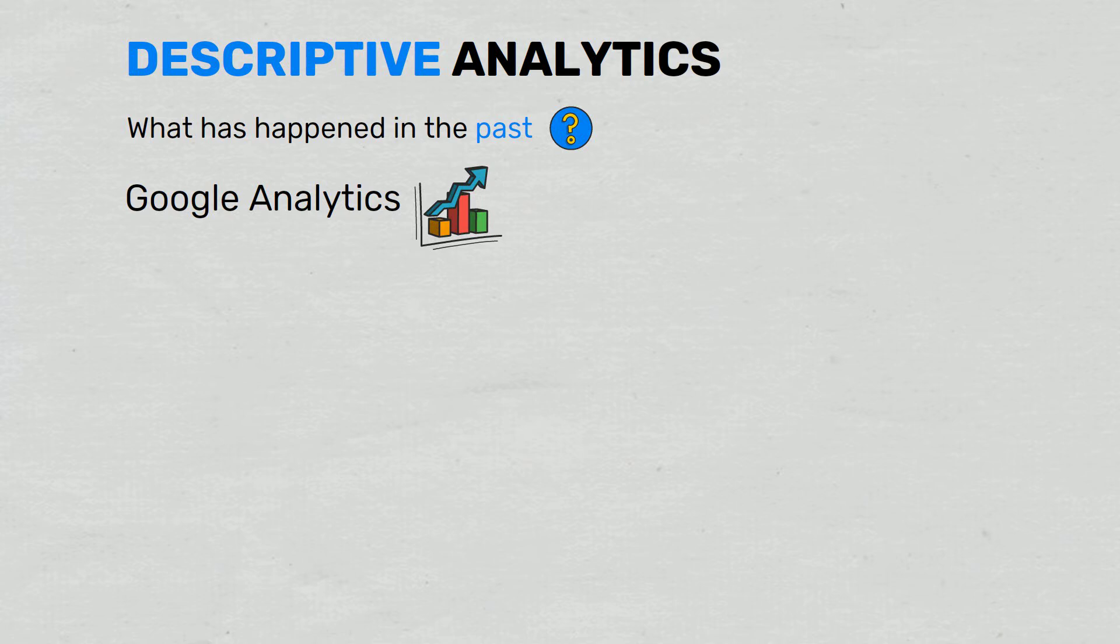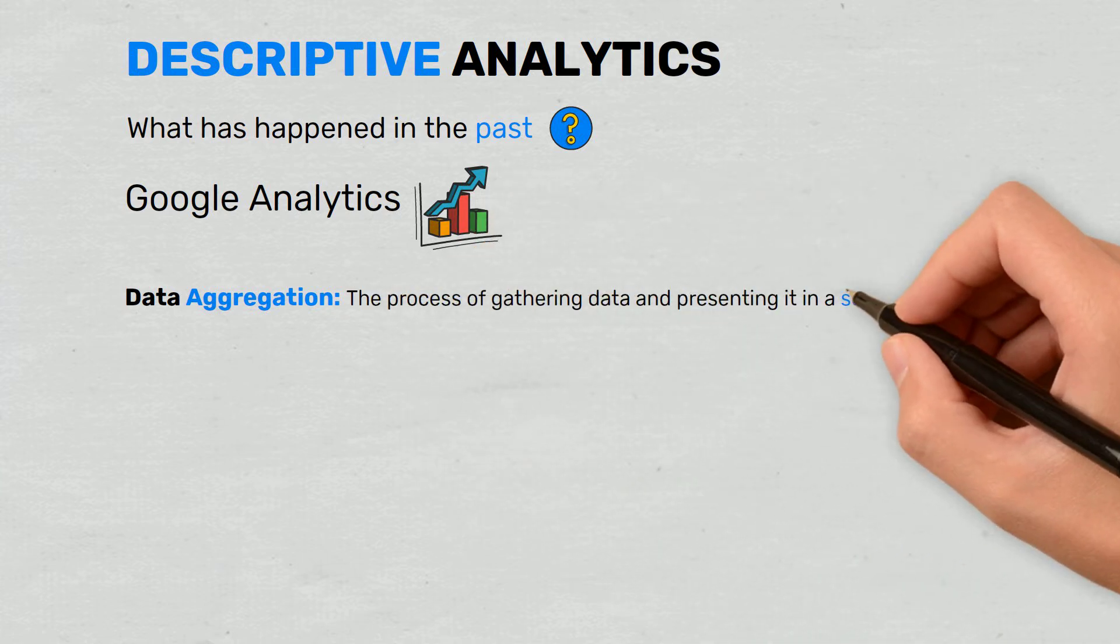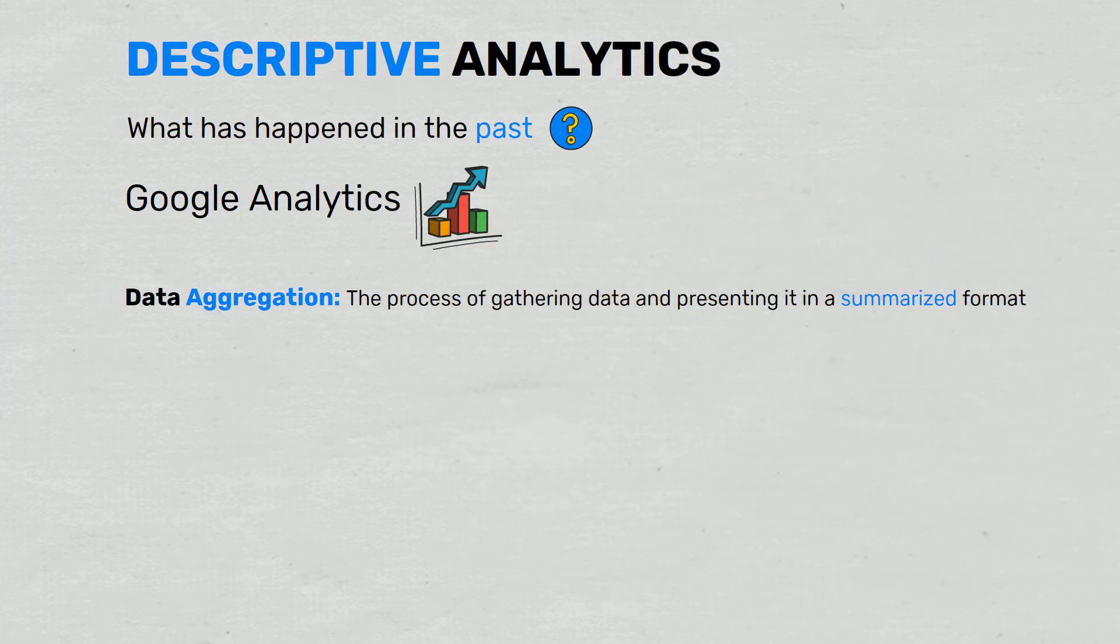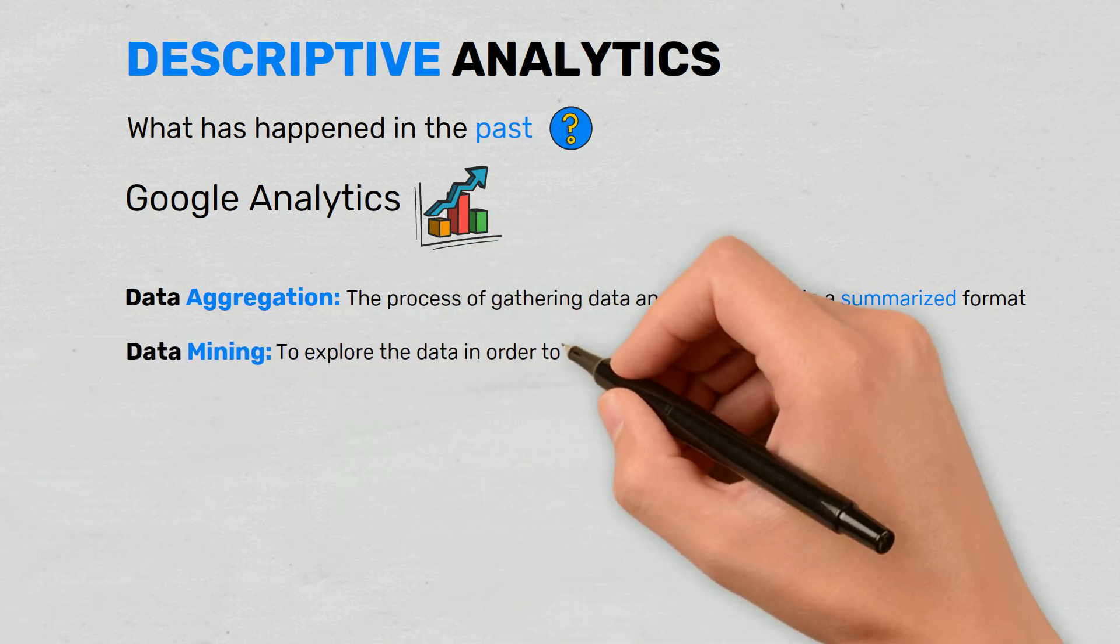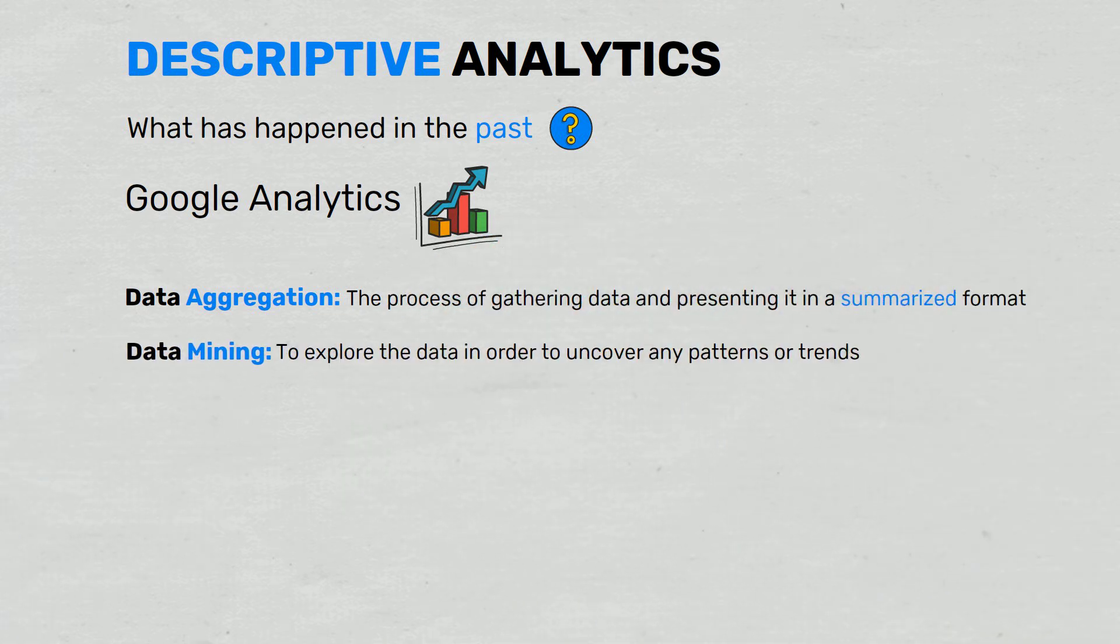There are two main techniques used in descriptive analytics: data aggregation and data mining. Data aggregation is the process of gathering data and presenting it in a summarized format. Data mining is the analysis part that explores the data to uncover any patterns or trends.